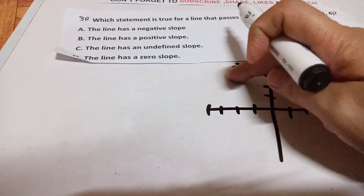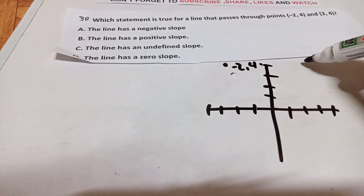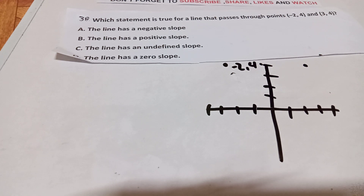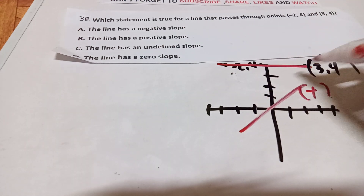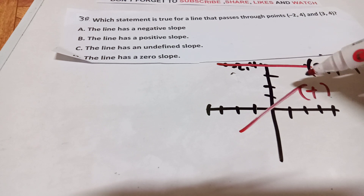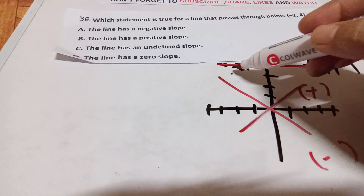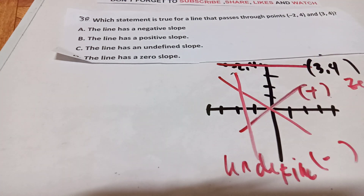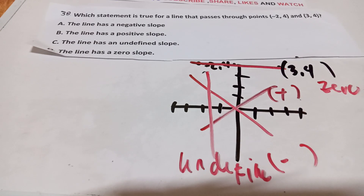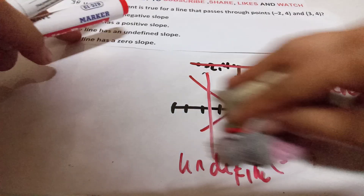With negative 3 and 4, if we draw this it automatically represents a straight horizontal line. Recalling the rules: a line going from left to right upward is positive, downward is negative, a vertical line is undefined, and a horizontal line has zero slope. So the answer is letter D — this is what you call zero slope.